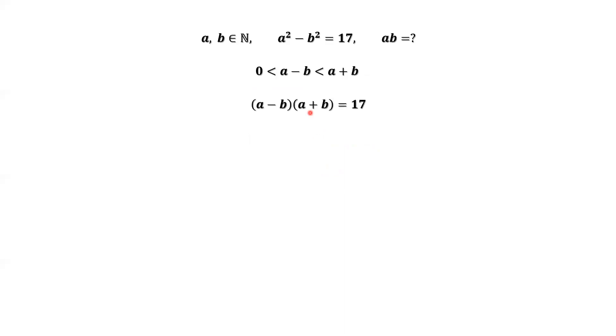This is the current result. Now, 17 is a prime number. Therefore, one of the factors is 1. The other is 17 because A minus B is less than A plus B. Therefore, A minus B is 1. A plus B is 17.